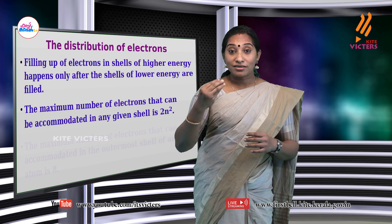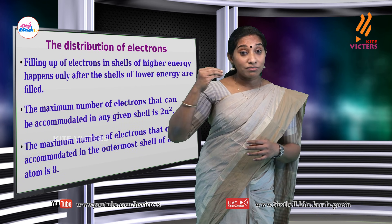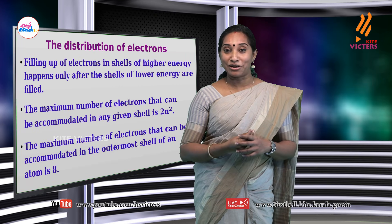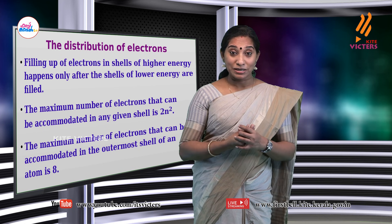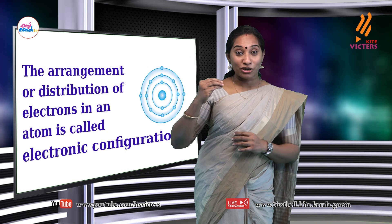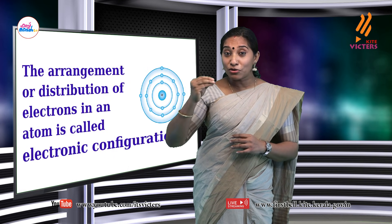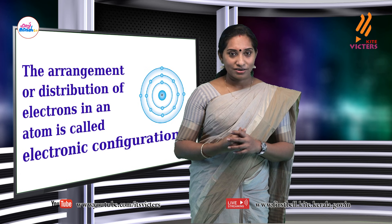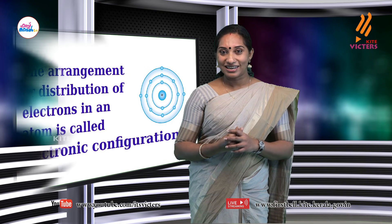The third principle: the maximum number of electrons that the outermost shell can accommodate is 8. In the second chapter you will study this concept in detail. These are the main basic principles. Now you know how electrons arrange themselves in shells. This arrangement of electrons is called electronic configuration. Do you understand what electronic configuration is?